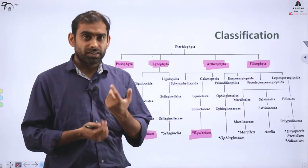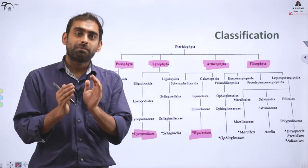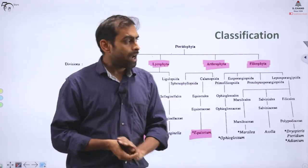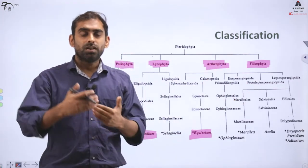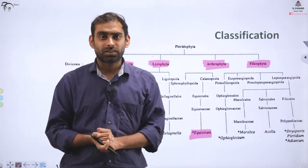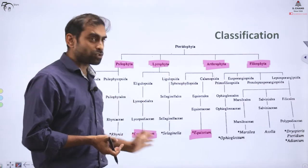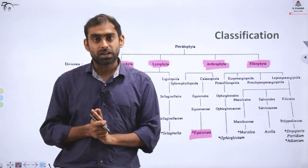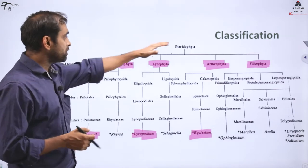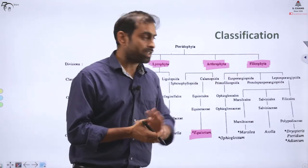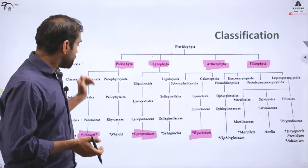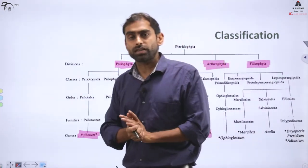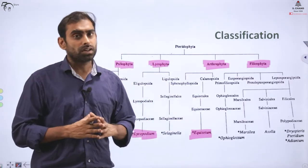Welcome back to S.Chan Academy. We were talking about pteridophytes and now you understand their basic characters. They are divided into 4 categories. This classification is not exhaustive — meaning it does not include molecular basis — but it is a traditional classification established merely on the basis of phenotype and morphology.